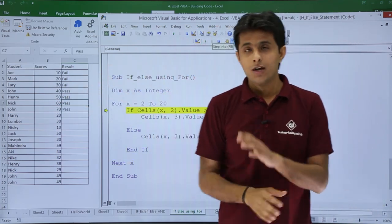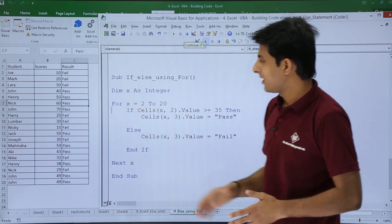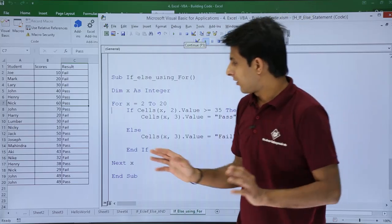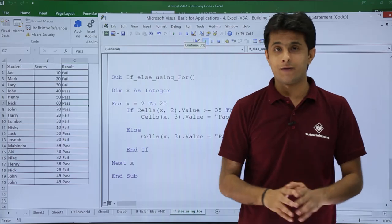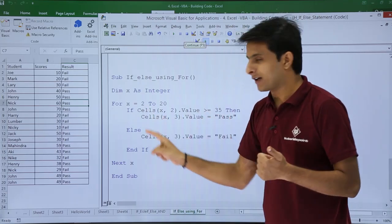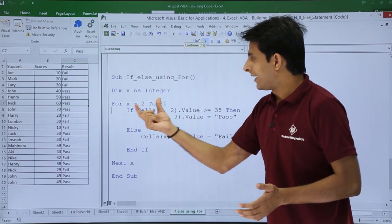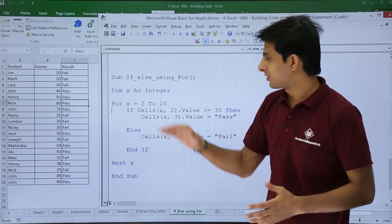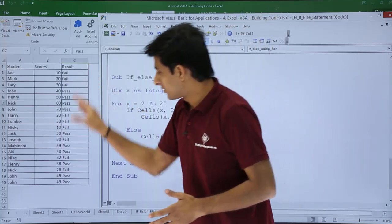Sixth one, seventh one, and so on. If I click on run button, I have got the result as pass and fail for every place. If I check, 38 is given as pass, 29 is given as fail, which is absolutely working fine. I hope you have understood - for if else condition I need pass and fail result, so I have used if else condition. I have to repeat it for multiple times, so therefore I have used for loop, for x equal to 2 to 20.